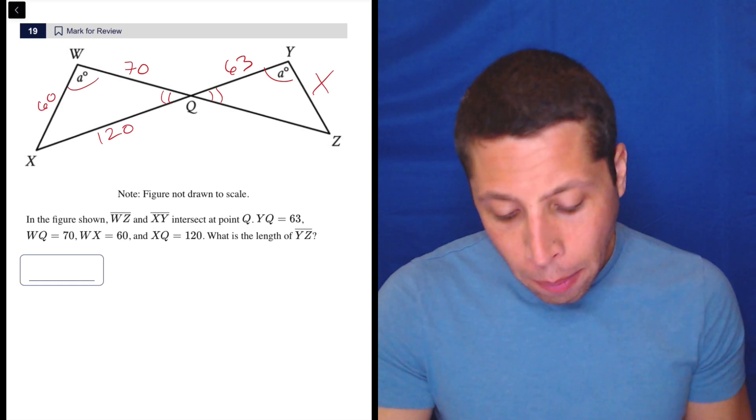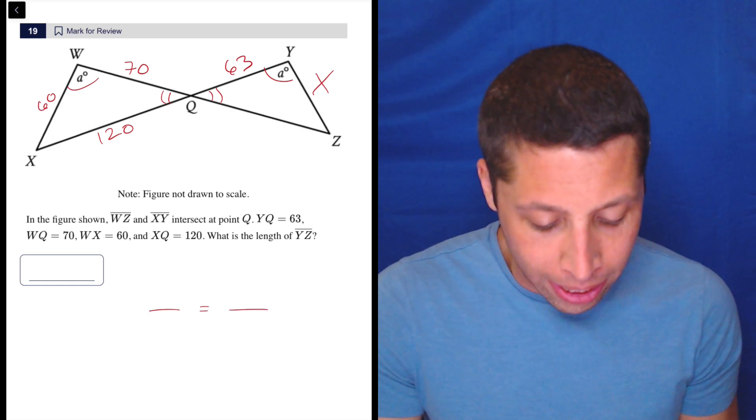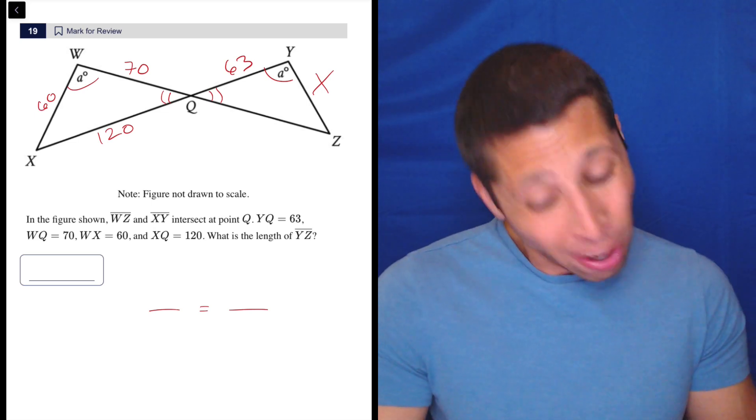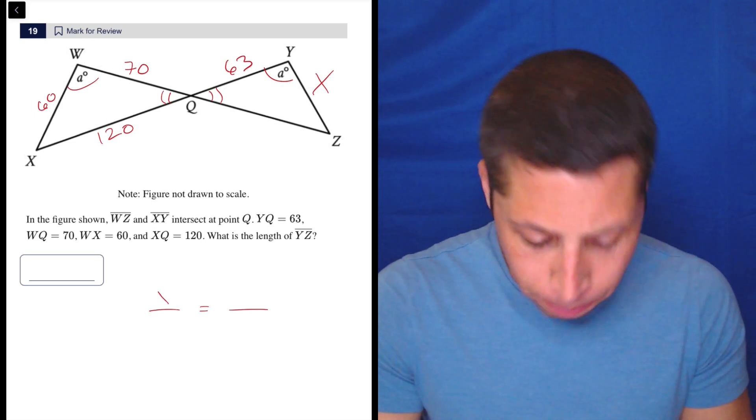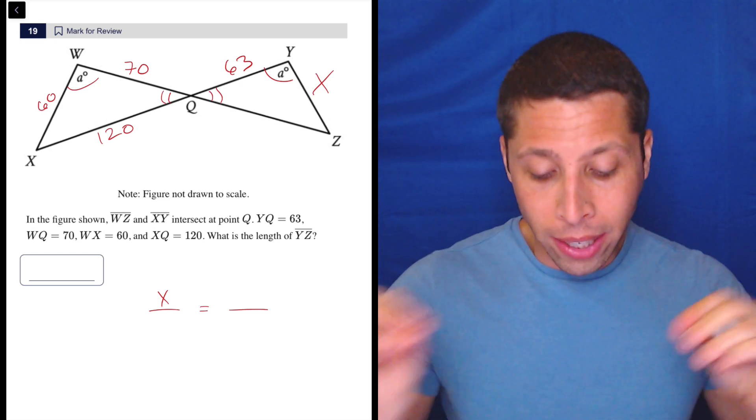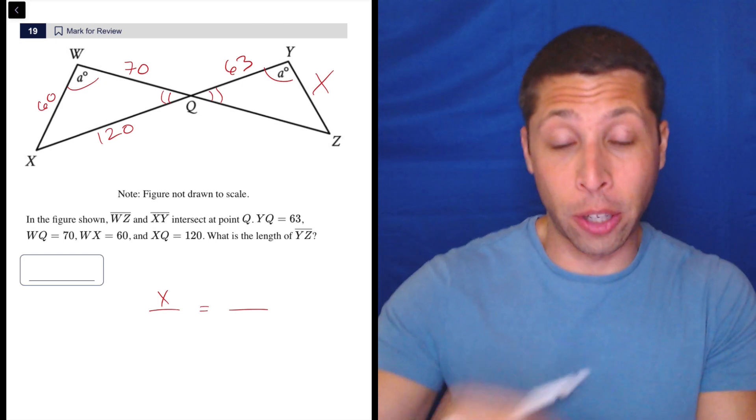So when we set up a proportion, we have a lot of flexibility how we do that. We want to make sure though that we're matching pieces that match. In this case, I don't think it's that hard. I think it's kind of obvious what you're going to do, but I would start with the piece we're missing, the X. Then I would say, what is the piece of the other triangle that corresponds with that?